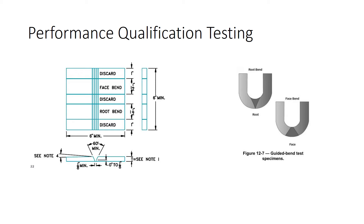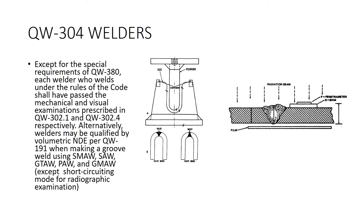For performance qualification — welder testing — most of the time we use a test plate and do bend tests. You cut out face and root bends and then bend them. It tells you if the material has the ductility you're looking for. This is pretty much the general mode for welder qualification. Sometimes, however, you can use radiography instead of bend tests.